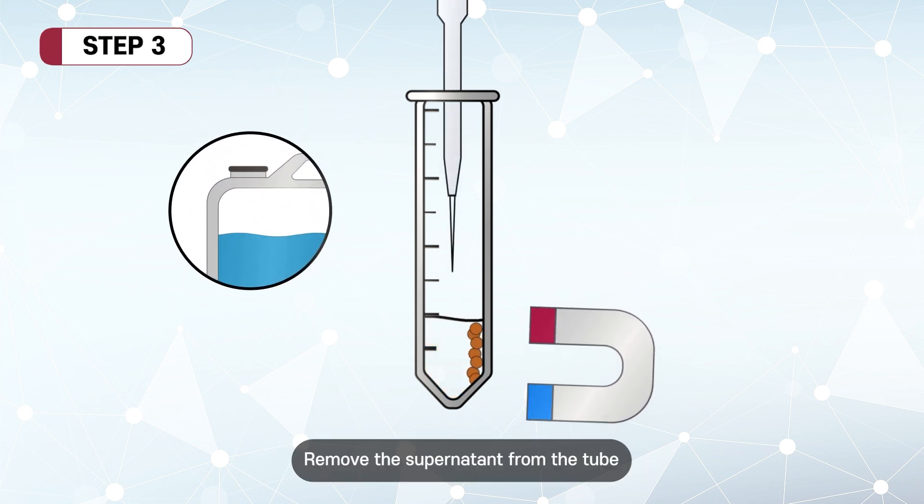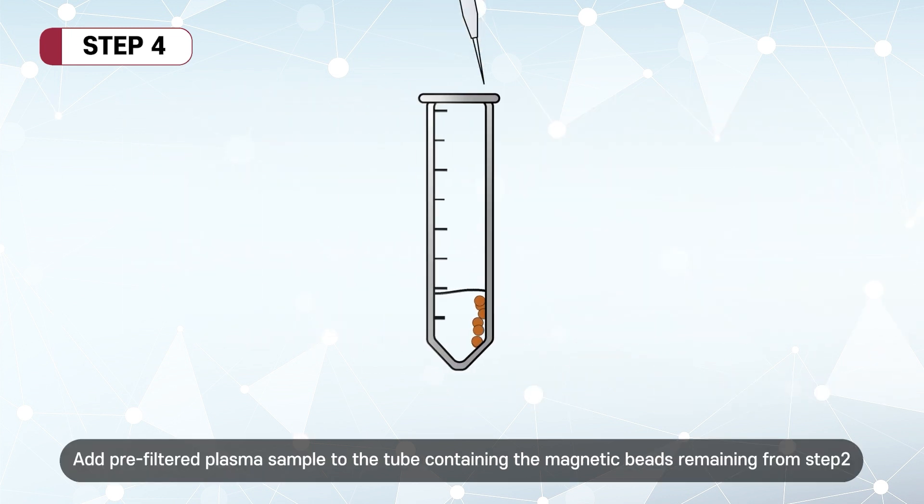Remove the supernatant from the tube. Add pre-filtered plasma sample to the tube containing the magnetic beads remaining from step 2.